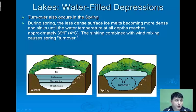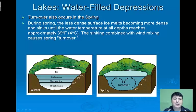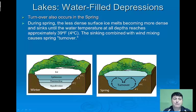Turnover also occurs in the spring. During the spring, the less dense surface ice melts, becoming more dense and sinking until the temperature at all depths reaches approximately 39 degrees Fahrenheit or 4 degrees Celsius. The sinking of that water combined with wind mixing causes a spring turnover.